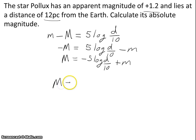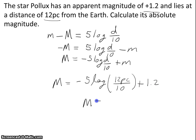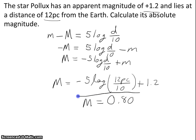So absolute magnitude equals negative 5 log of 12 parsecs divided by 10, plus our apparent magnitude of 1.2. We find that the absolute magnitude of this star, Pollux, is positive 0.8.